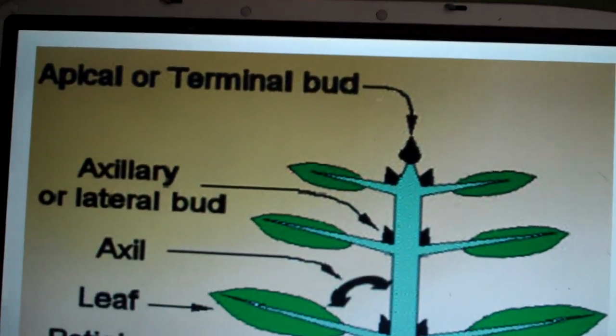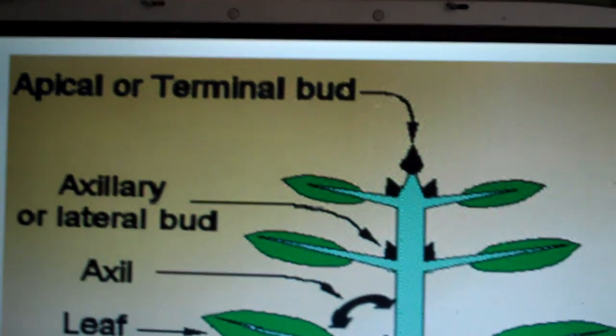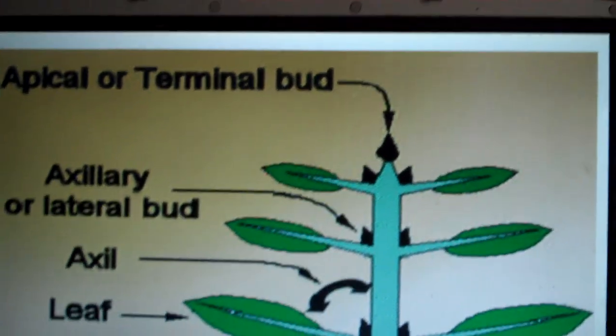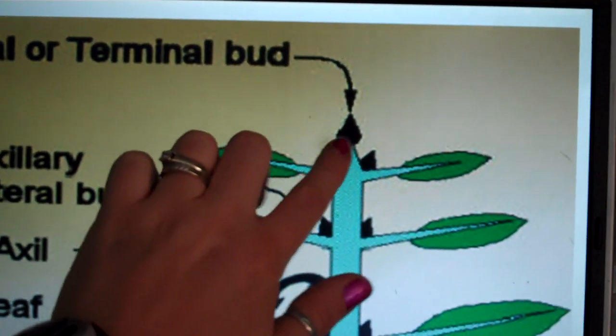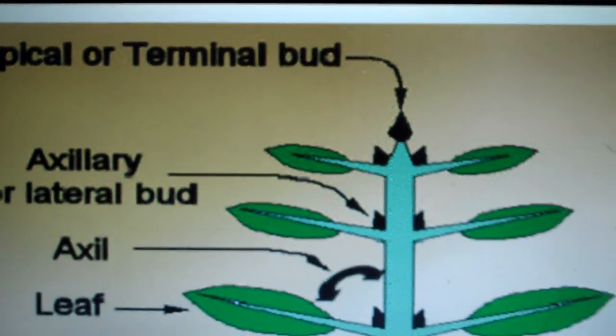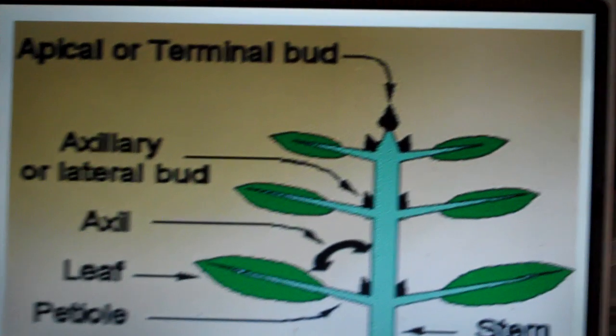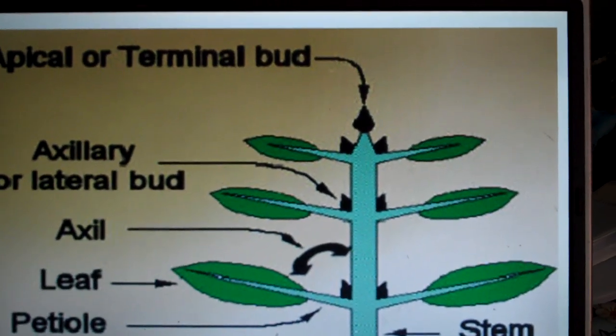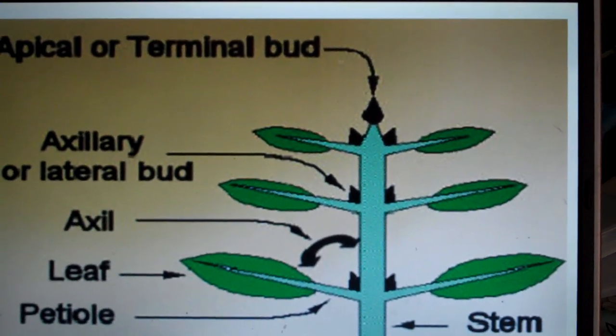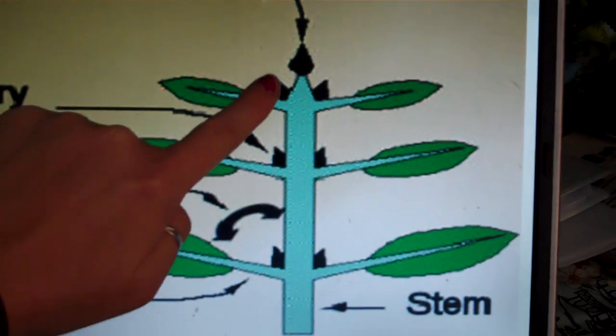Now the shoot system consists of an apical or terminal bud which is located at the tip of the plant, the very top. This is where primary growth occurs where the plant is going to increase in height. We also have a stem which is this region here.